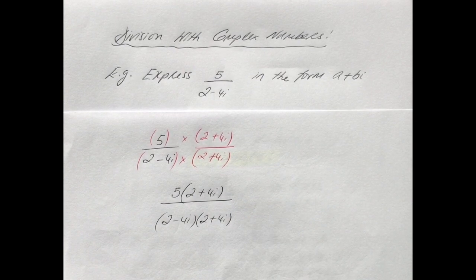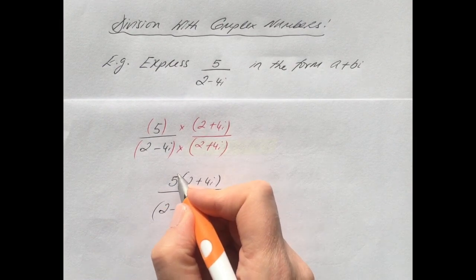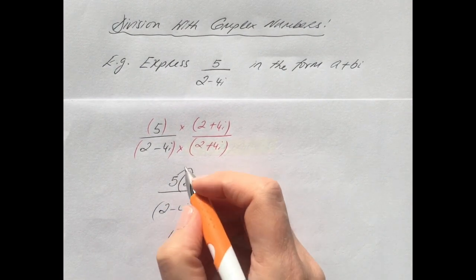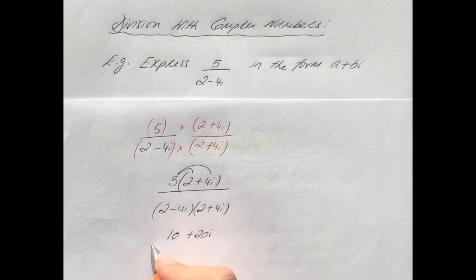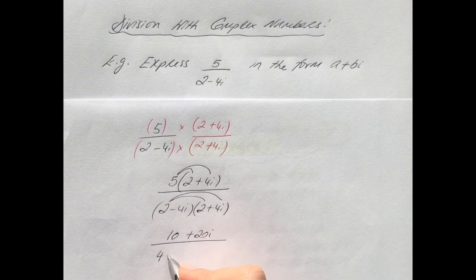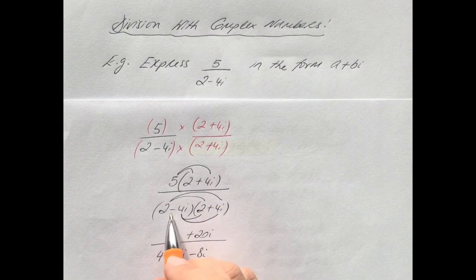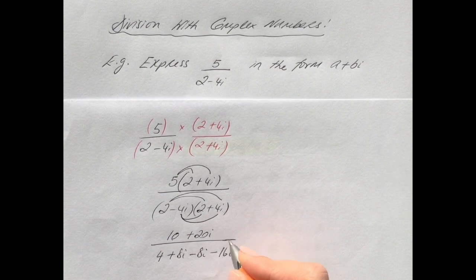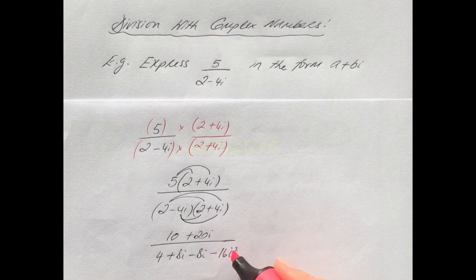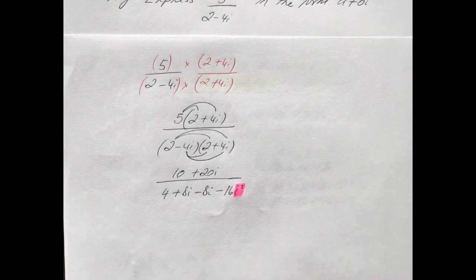Multiplying out the brackets: 5 times 2 gives 10, and 5 times 4i gives 20i on the top. On the bottom: 2 times 2 is 4, 2 times 4i is 8i, minus 4i times 2 is minus 8i, and minus 4i times plus 4i — a minus by a plus is minus — gives minus 16i squared.